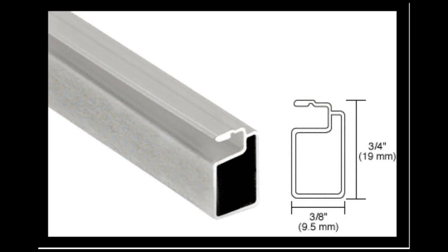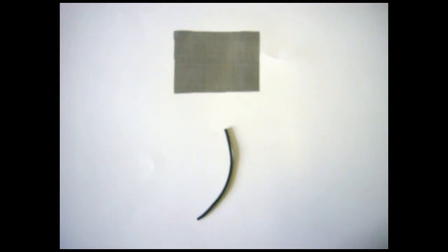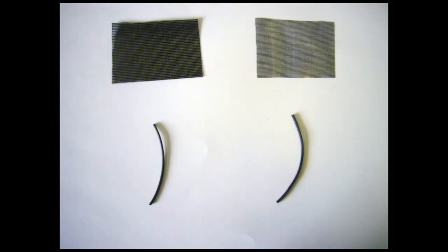All screen frame comes with a spline channel. You are going to need to use different size splines depending on the size of your screen frame and the thickness of the screen material you are using. A typical size spline using charcoal fiberglass and our screen frame is .140. If you are using a thicker material such as PET screen, you can use a .135 or .130 spline.